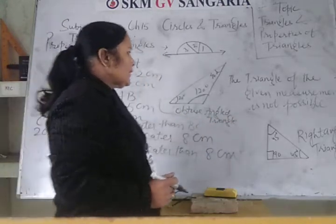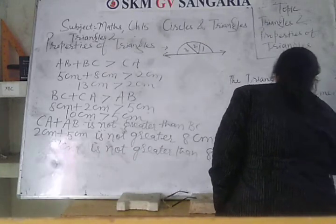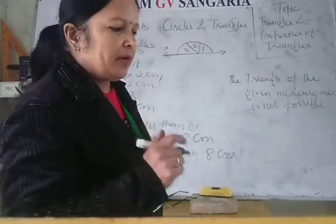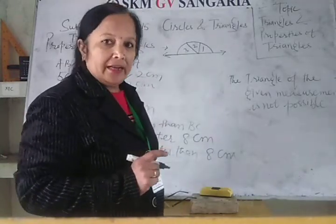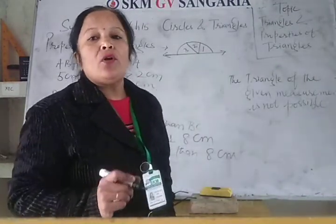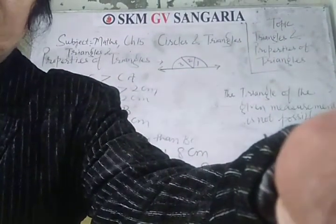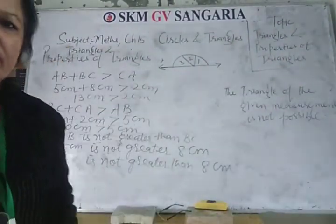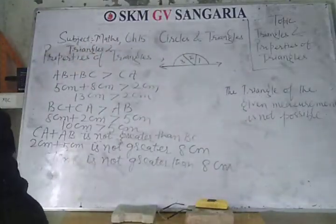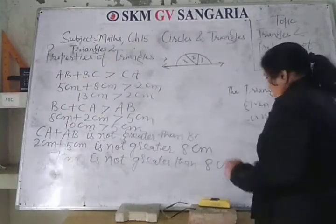So this is the recapitulation about types of triangles based on sides and angles. Today I will tell you about the properties of triangles. The first property is the angle sum property: the sum of all three angles of a triangle is always equal to 180 degrees.